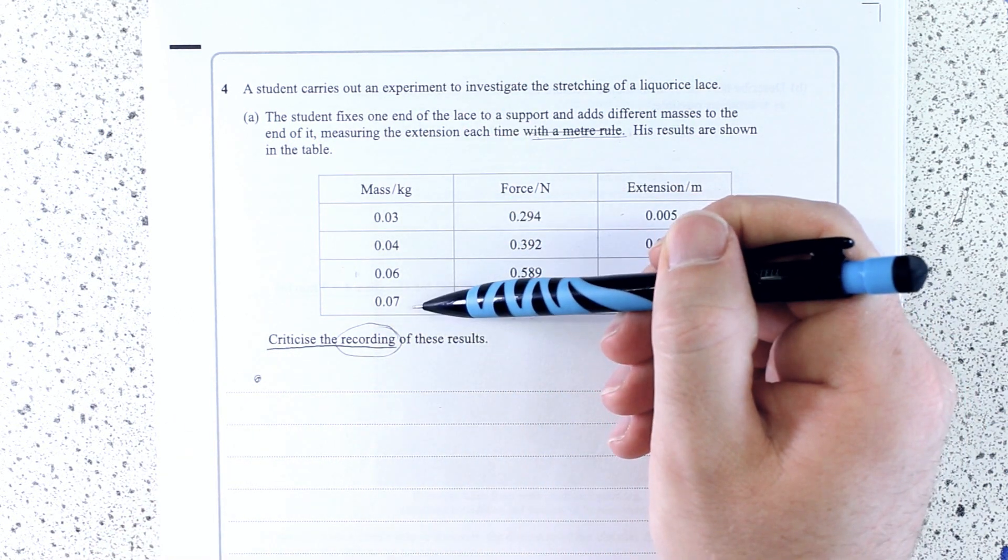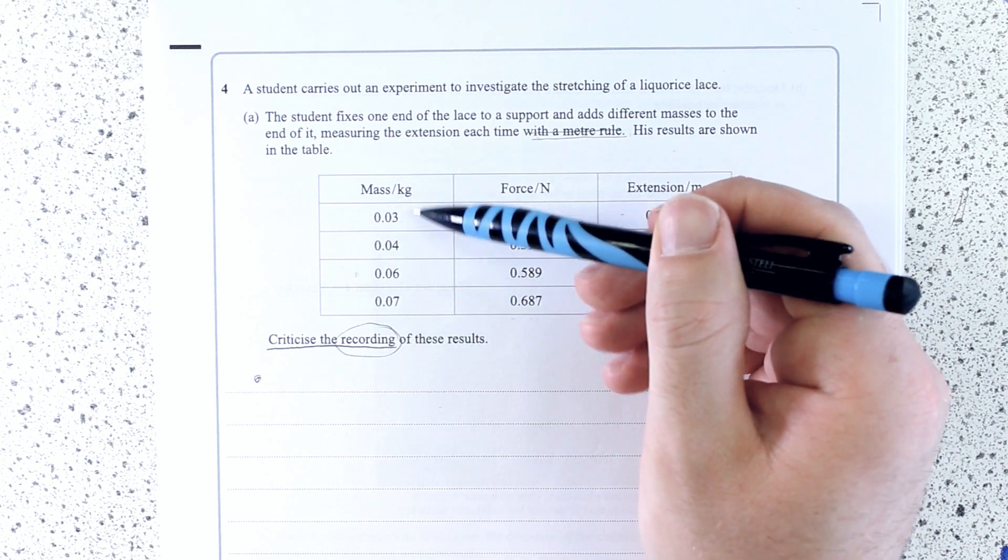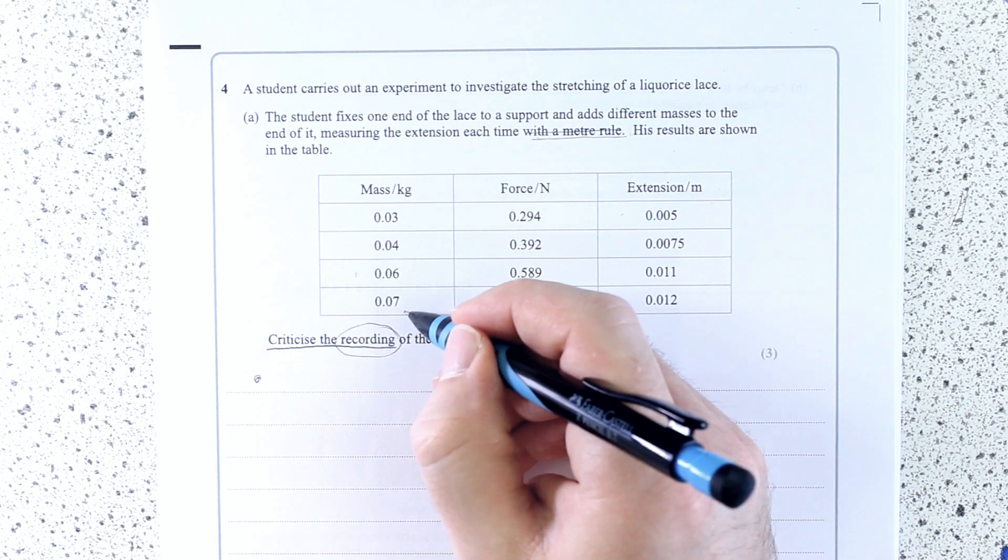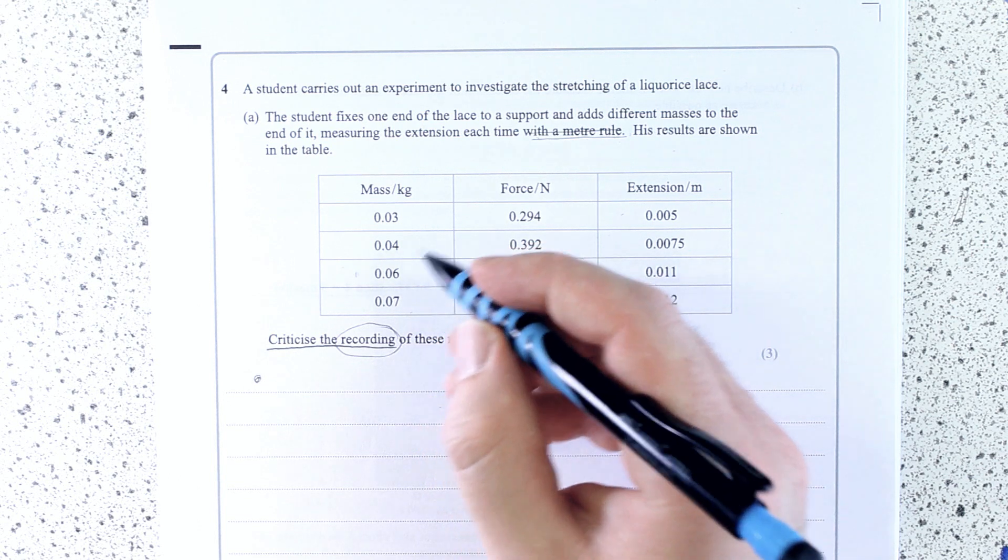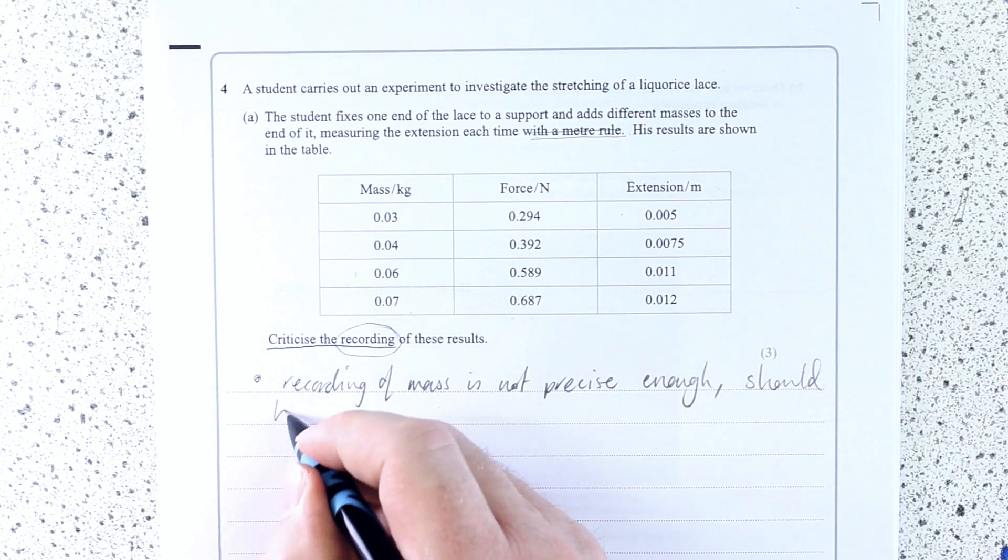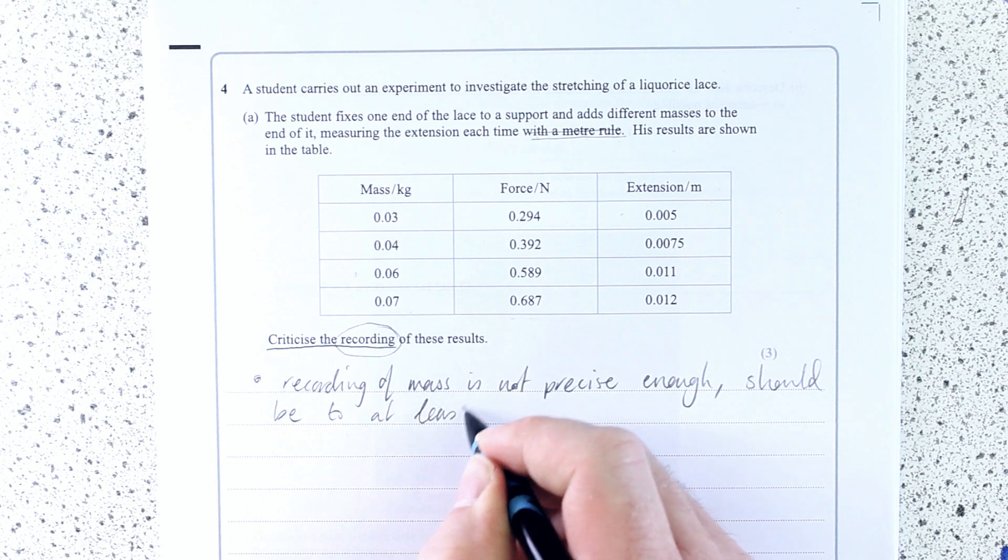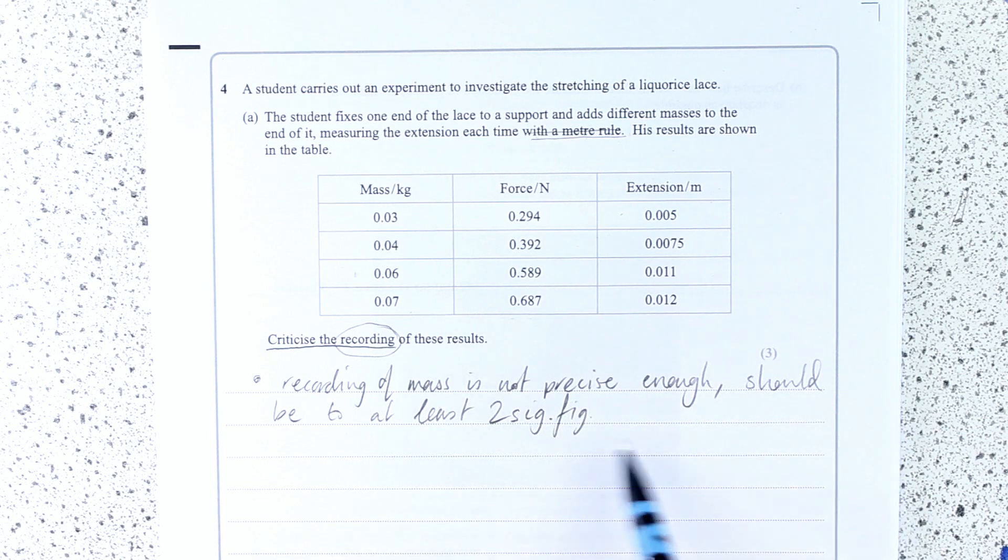Well, this mass in kilograms, if you've got a top-pan balance, then you can definitely measure two whole numbers of grams, maybe even more precise than this. This is not very precise. So we should have more precision on mass. It should be at least two sig figs. And that's what we need to think about in A-level physics, precision in terms of numbers of sig figs.